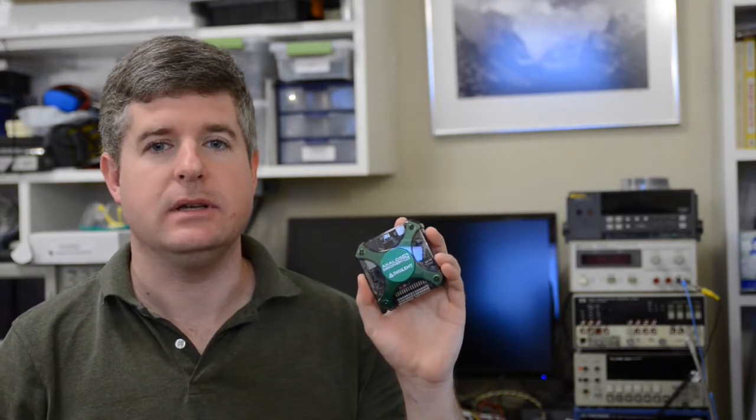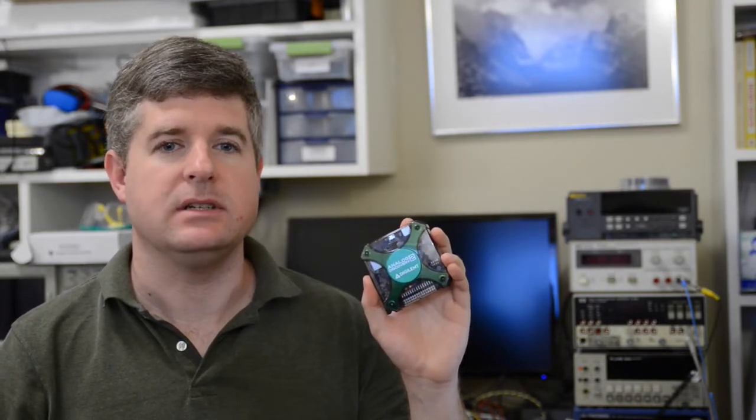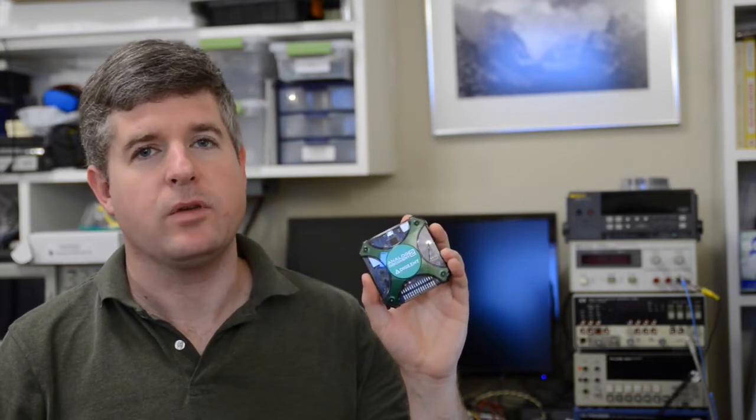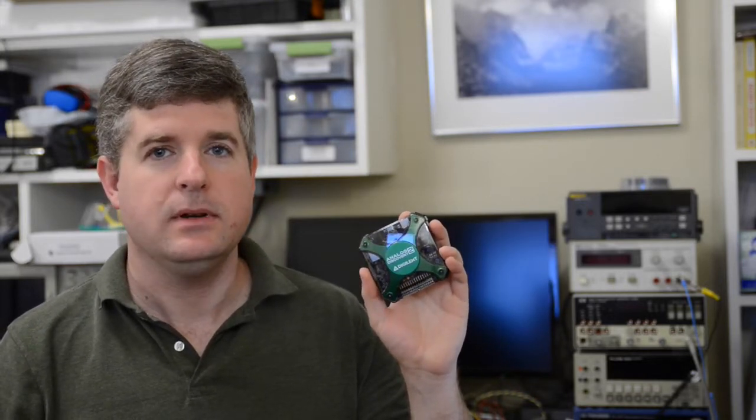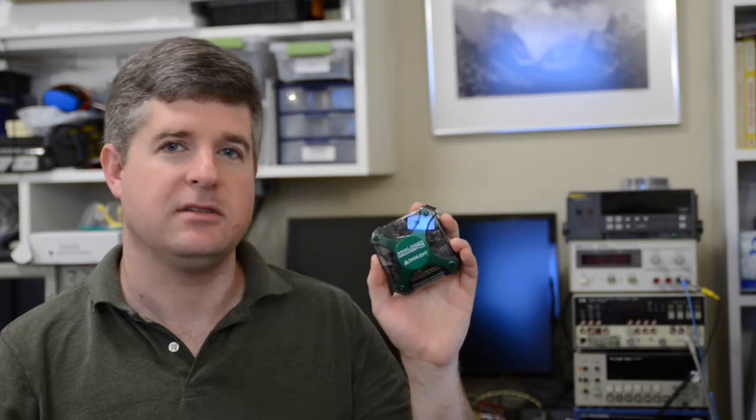The Analog Discovery 2 is a $280, 100 mega-sample per second data acquisition system. When coupled with the waveform software, it can implement an oscilloscope, function generator, spectrum and network analyzer, and a few more functions in one unit. It can be used effectively as a way of measuring the loop gain without having to buy a multi-thousand dollar instrument.